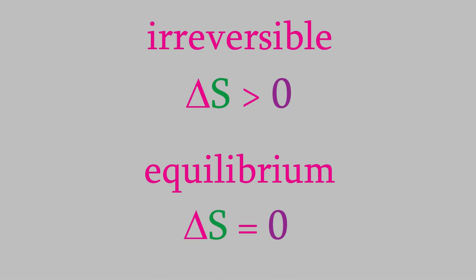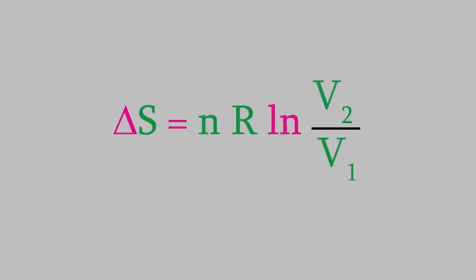Let's start by remembering that, way back in video 21, we saw that for a reversible process, we can express the entropy using this equation. We can use this to determine the entropy change that occurs in one of the simplest possible processes, the mixing of two gases.